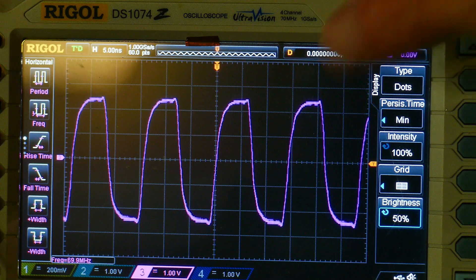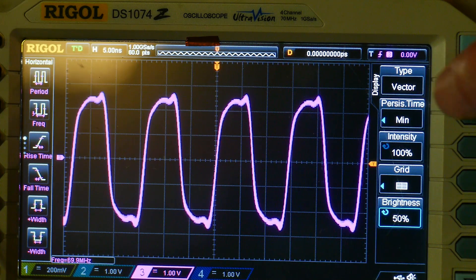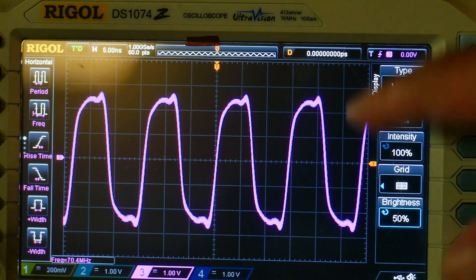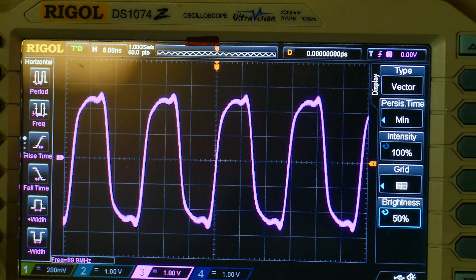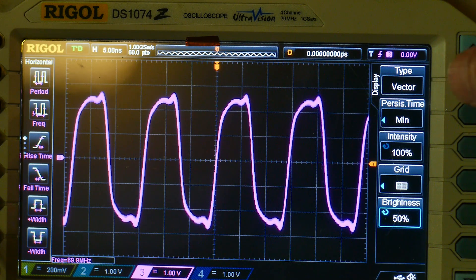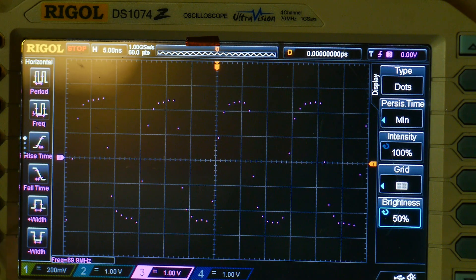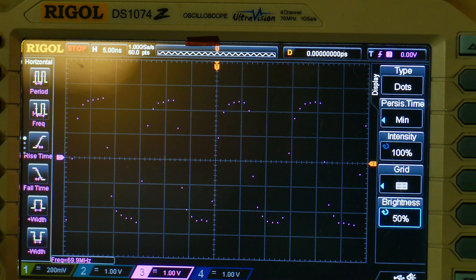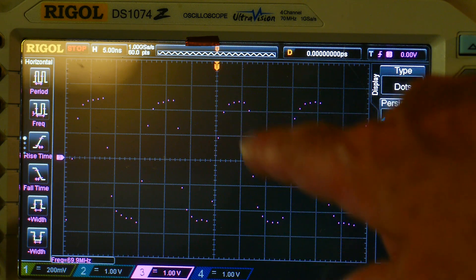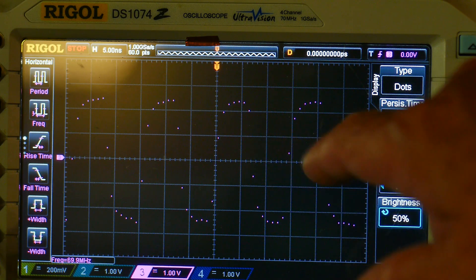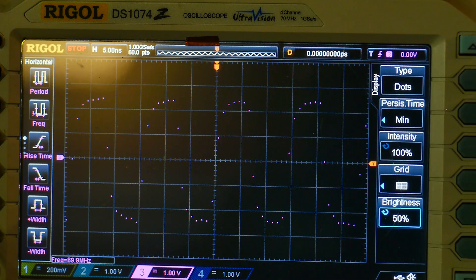There's a couple ways that you can display things - you can display it with dots or you can display it with vectors. Here's vectors and here's dots. You see that when I turn on vectors it's giving me some ringing here that really isn't there. If we turn on the dots and then I do a single sweep, you can see the individual sample dots. It's about seven per half period, so maybe 15 in an entire period.